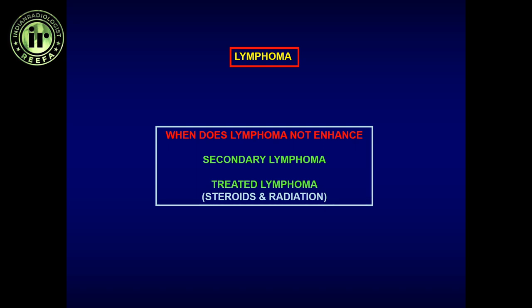Primary lymphoma will almost always enhance intensely with sheets of enhancement, but there are certain conditions when it may not enhance. One is when it is a secondary lymphoma. The other is when it has been treated — giving steroids or radiation almost melts away the lymphoma. So when we see a large mass lesion with restricted diffusion but no enhancement, the first question we should ask is whether the patient has been treated with steroids or radiation, because we must think of lymphoma.